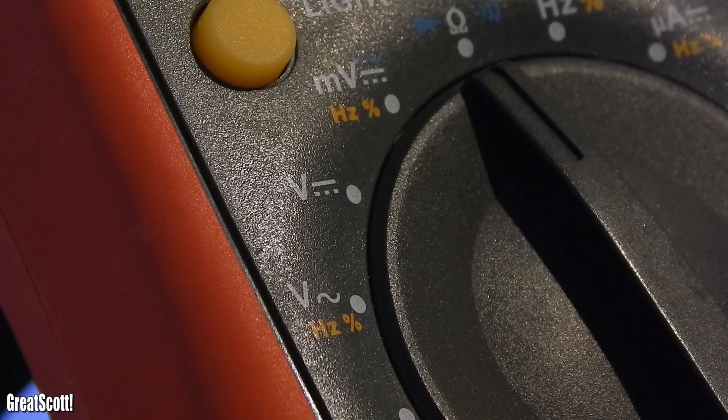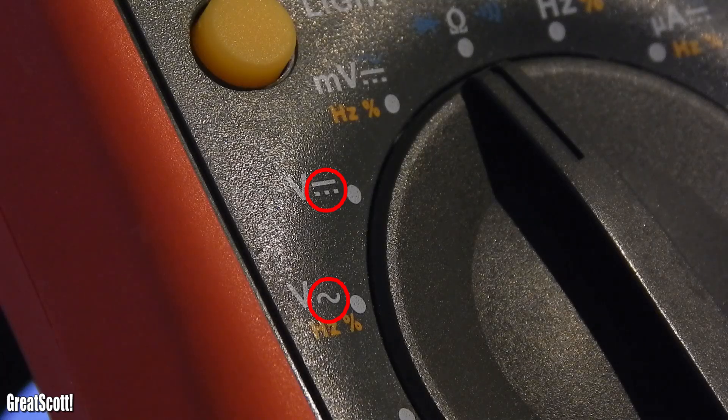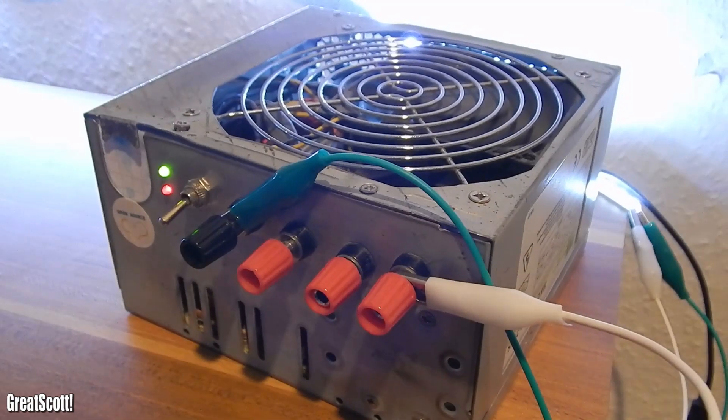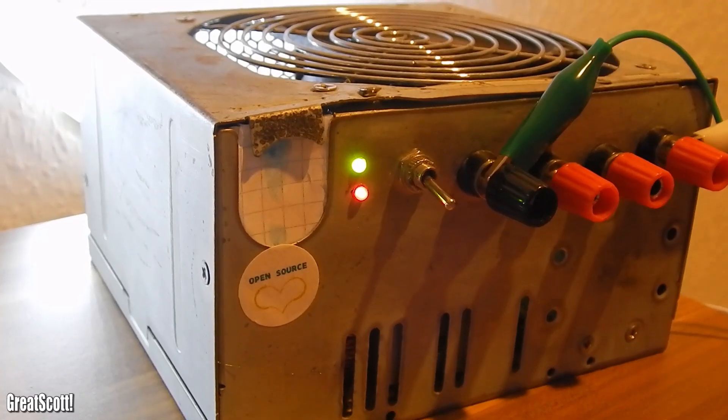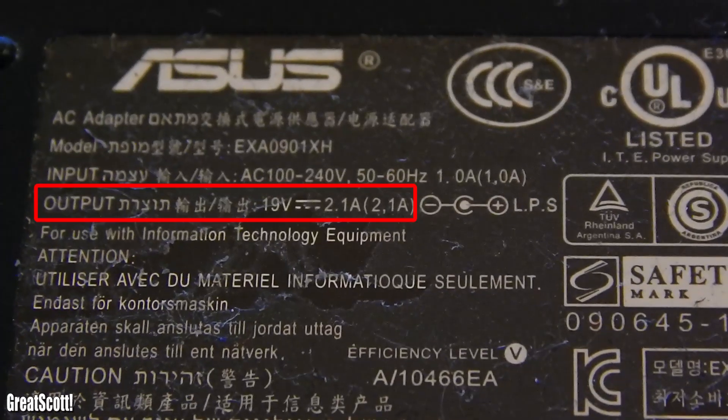Moving on to voltage. We have to distinguish between alternating current and direct current. Most people, including me, will mostly use DC. Batteries, your bench power supply output, in my case a modified ATX power supply, or your laptop charger output, all DC.